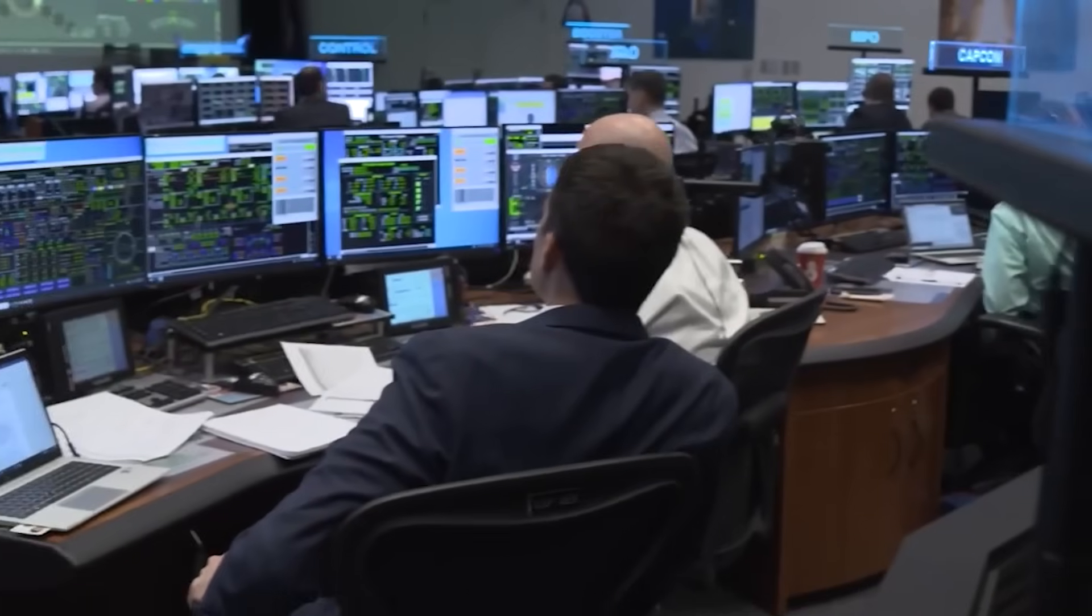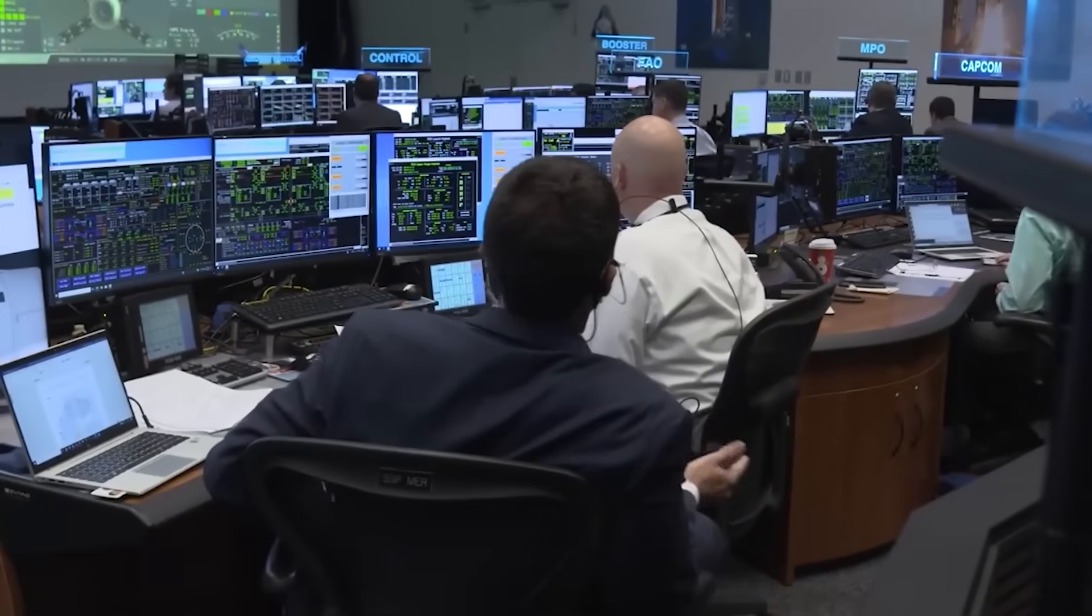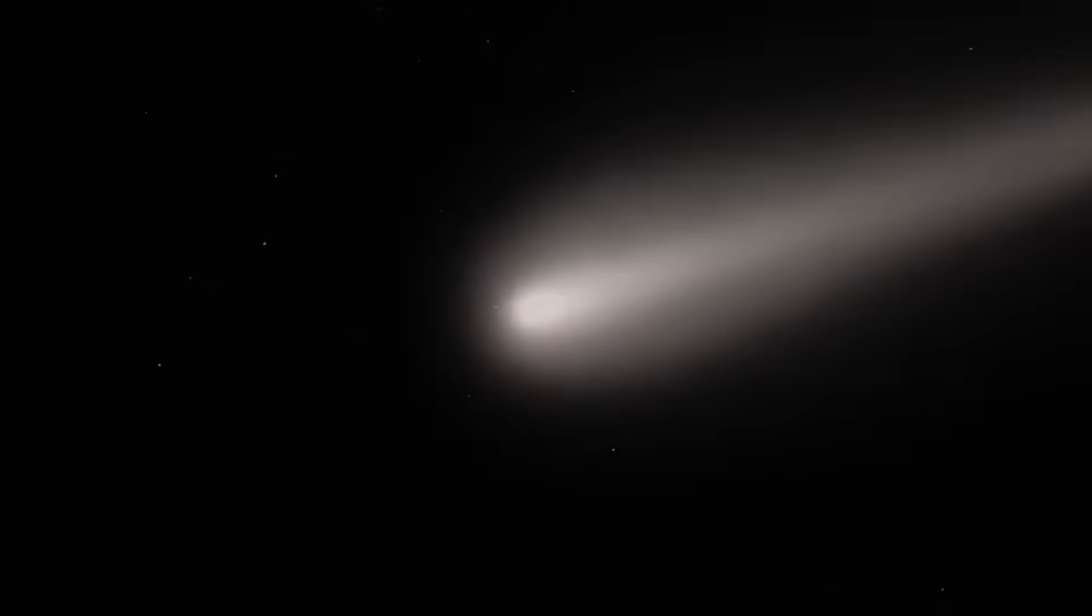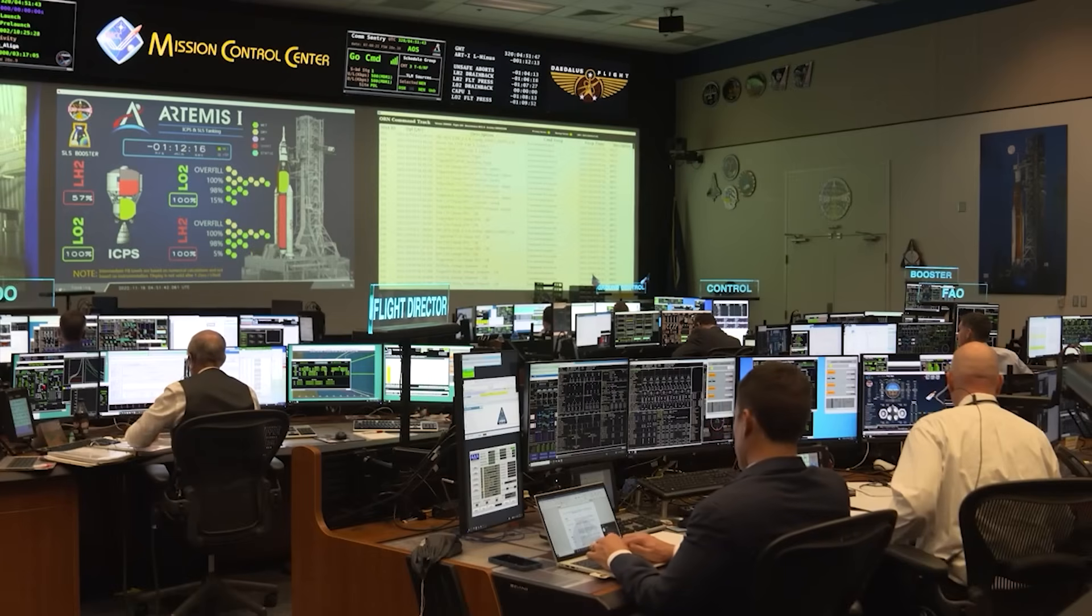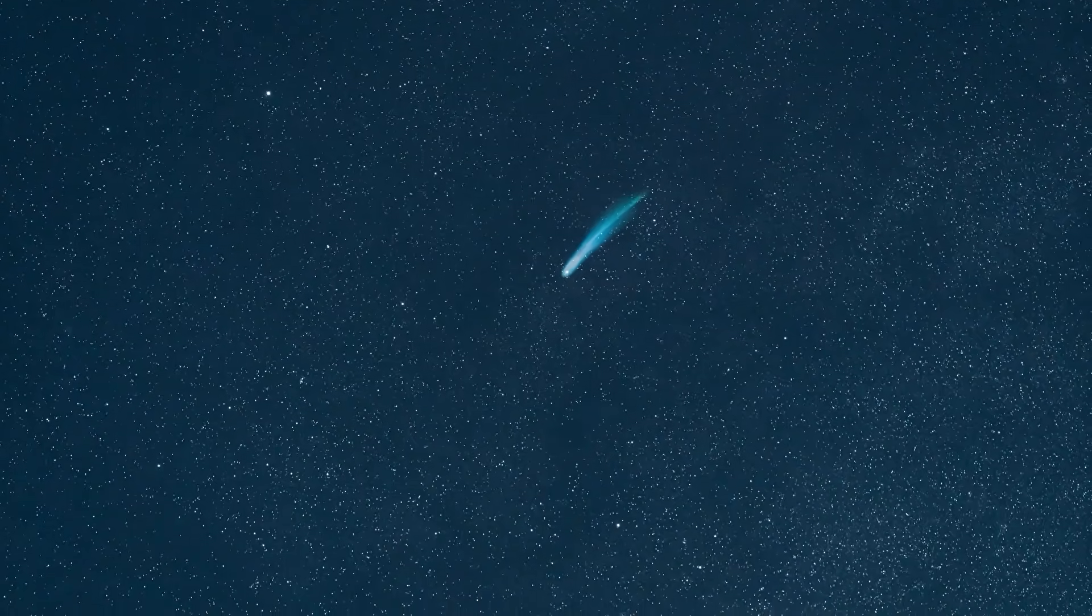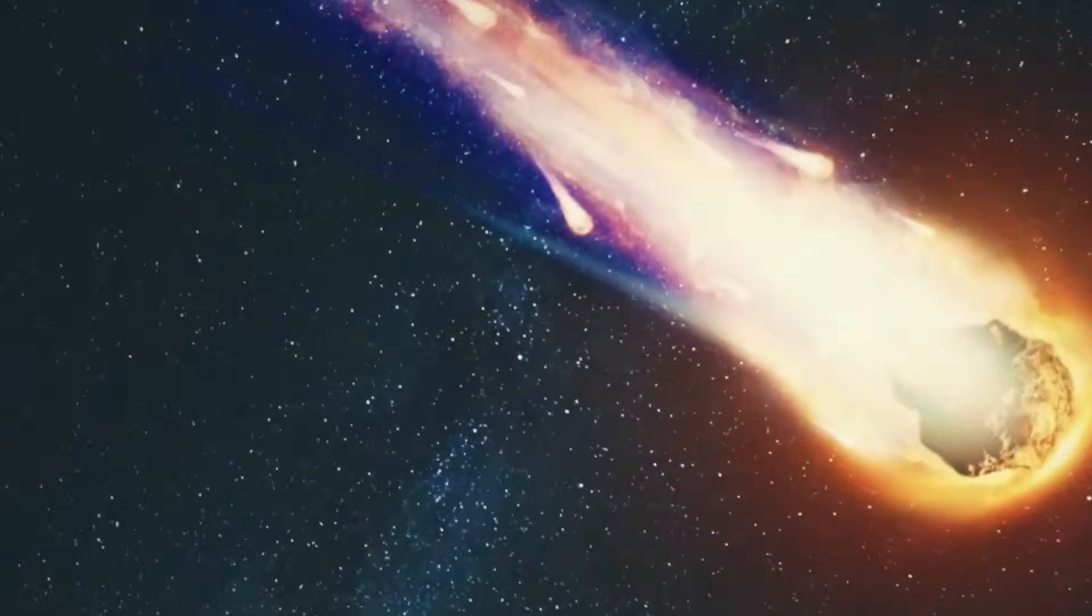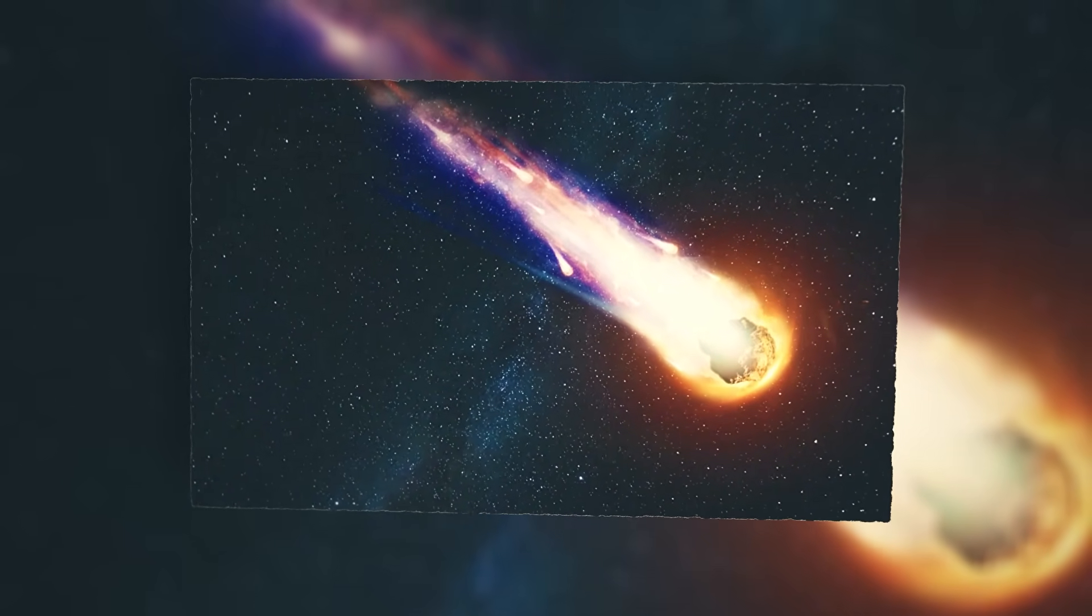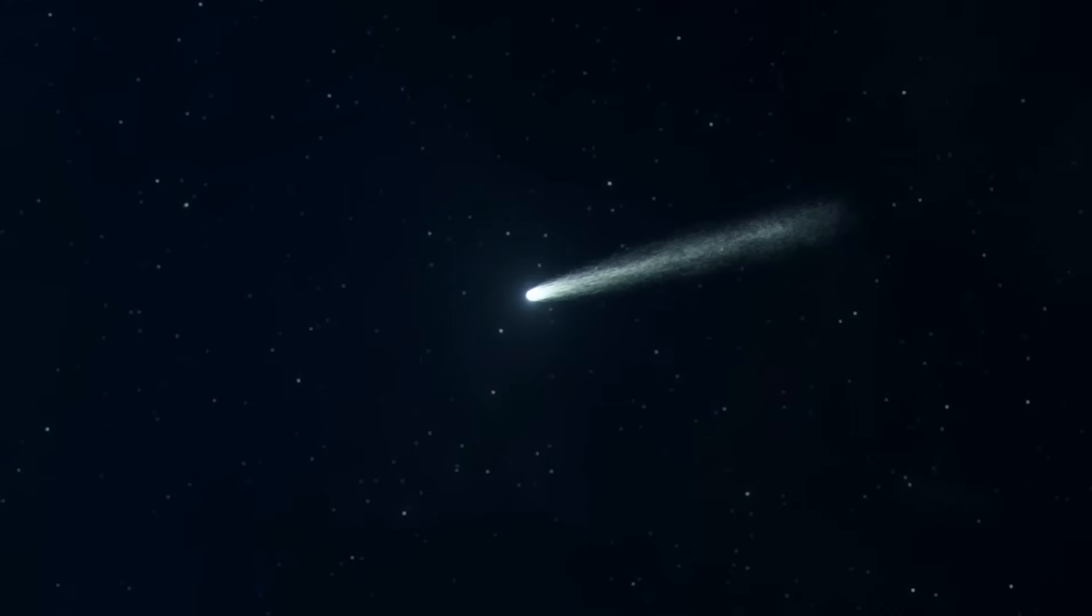What they found sent a jolt through the scientific community. Comets in our solar system are rich in water ice, it's their defining feature. But 3i Atlas was different. The instrument detected water, yes, but it was being drowned out by an absolutely enormous amount of carbon dioxide. The ratio of carbon dioxide to water was one of the highest ever recorded in any comet, from our solar system or otherwise.